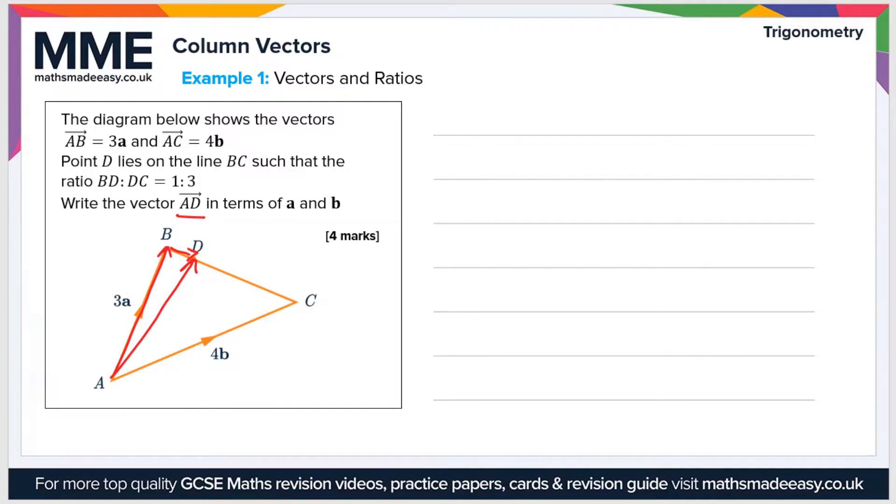Now we know what A to B is, that's 3a, so we just need to work out BD. But first of all let's just write an expression here so we don't get lost. So AD, which is what we're trying to find out, is equal to AB plus BD.